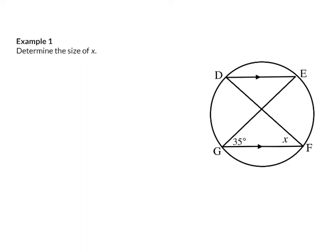Example 1. Determine the size of x. If we go and have a look at our picture, we can see that x is formed from arc DG. From that arc DG, I can also form angle E, which is also on the circumference, and that means that angle E will be the same size as angle F, which will be x.